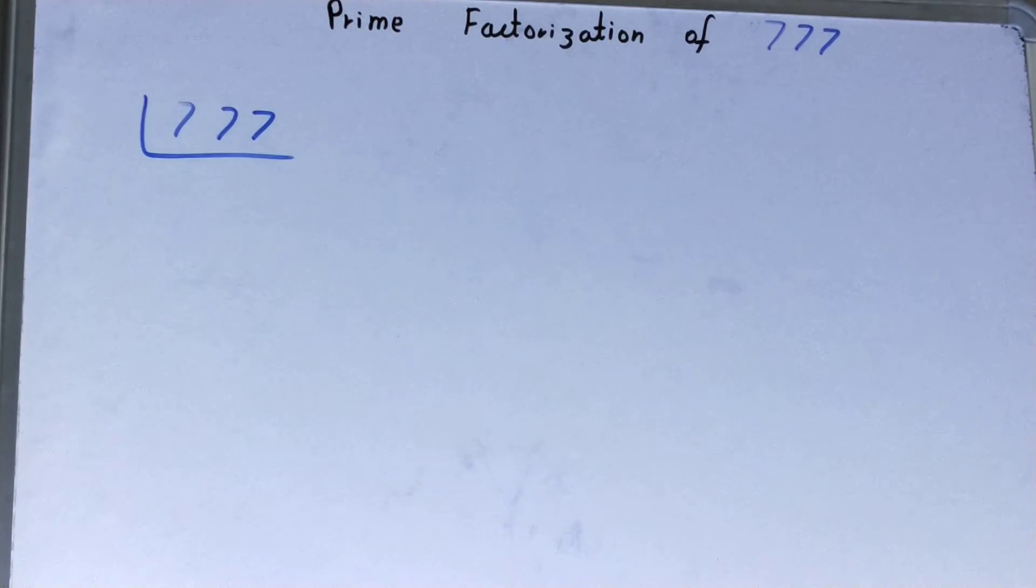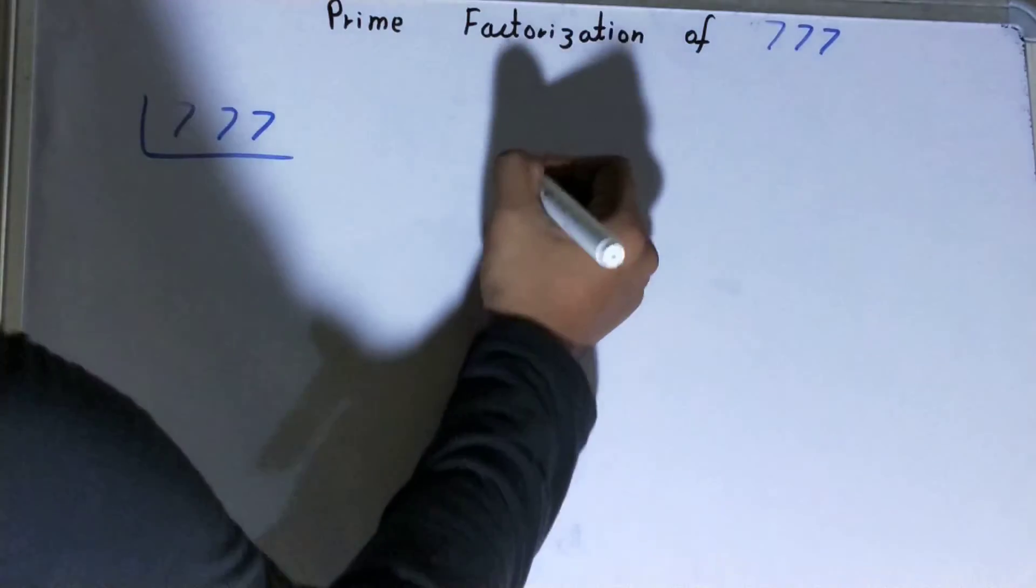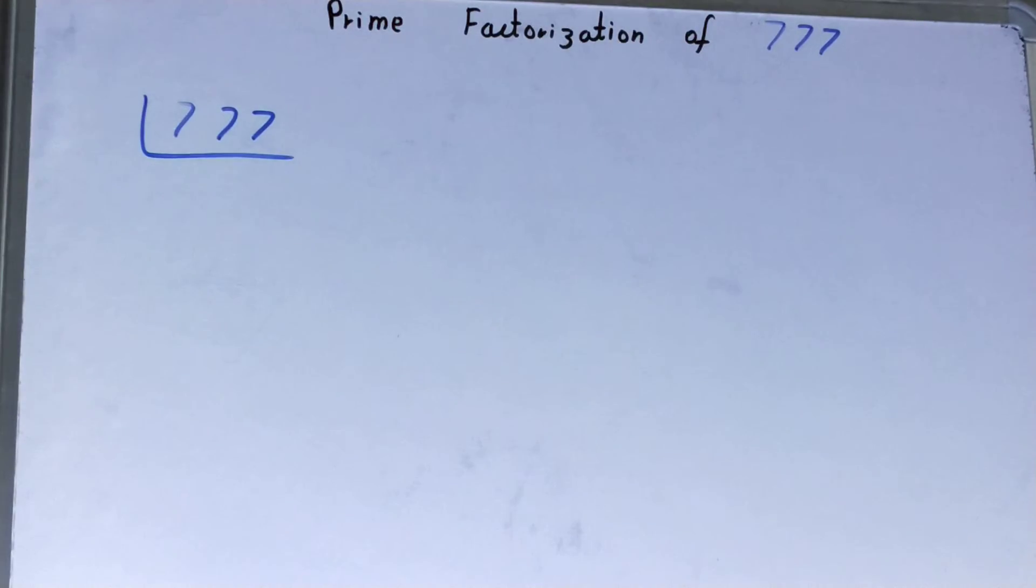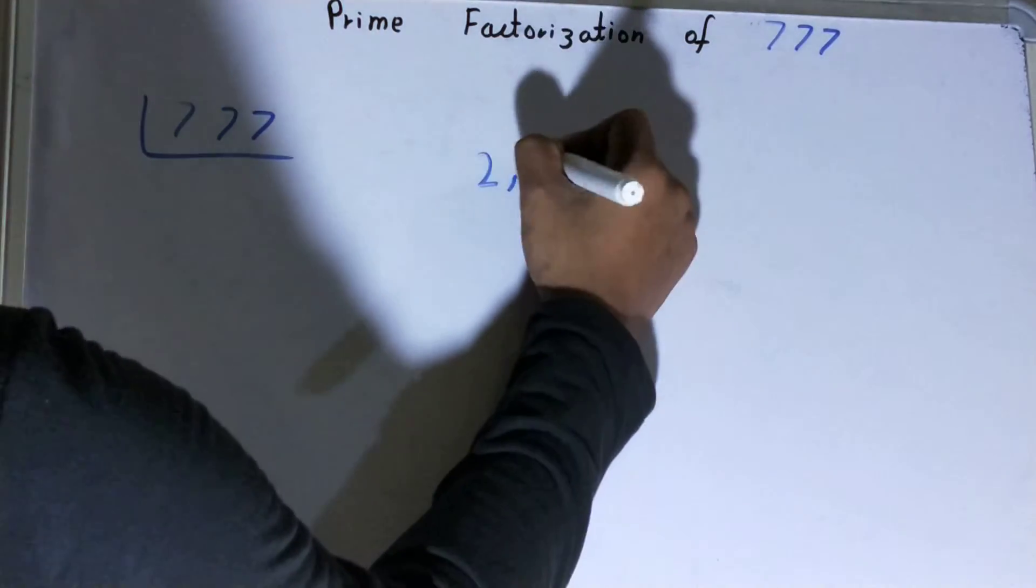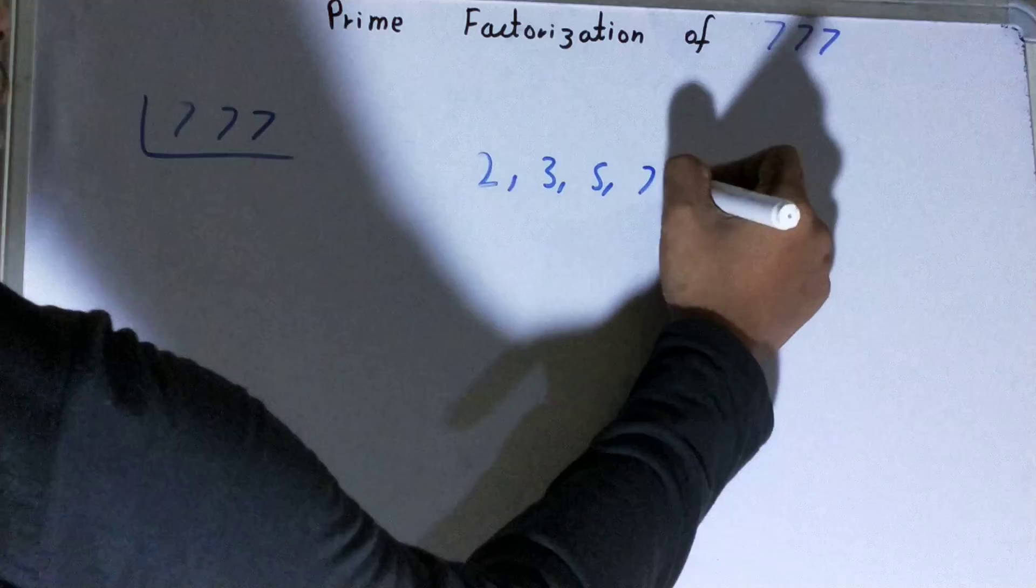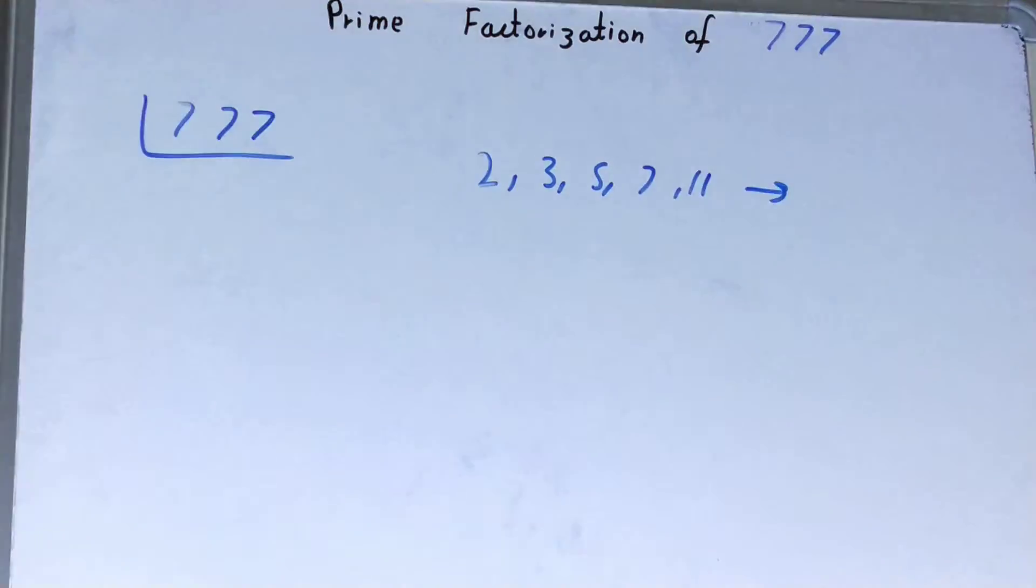But for this we need one thing: prime numbers. What are prime numbers? Prime numbers are numbers which are divisible by themselves or one, like 2, 3, 5, 7, 11, and so on.